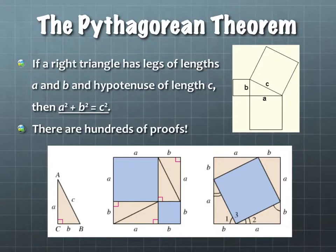The Pythagorean Theorem says the following. If we have a right triangle, that's important that it's a right triangle, and it has legs of lengths a and b and a hypotenuse of length c, then a² + b² = c².